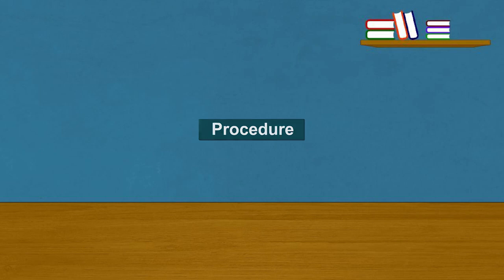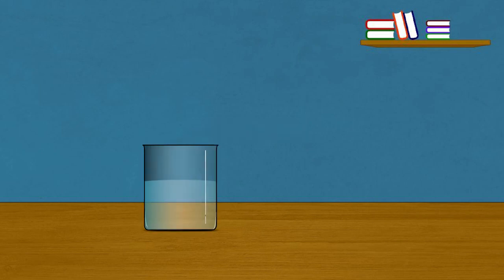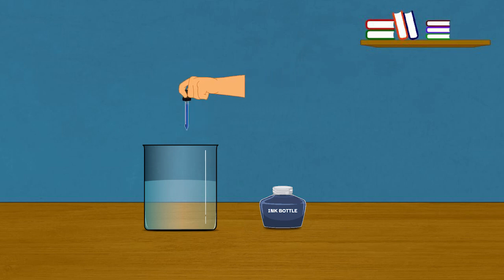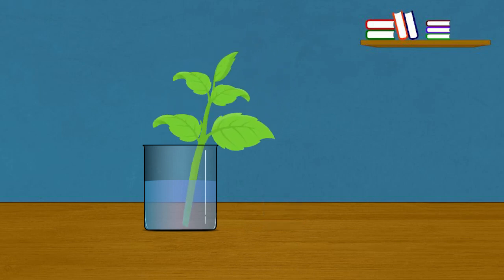Procedure: Pour water to fill one third of the glass. Add a few drops of red or blue ink to the water. Cut the base of the stem and put it in the glass. Observe the setup and see if the color appears in the stem. Keep it for a long period and observe if the color appears in the veins of leaves also.